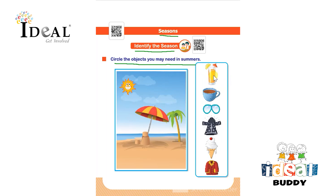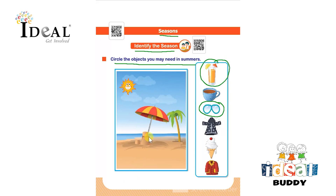The first object is a cold drink or an orange juice — they will need that during summer season. After that it is a cup of tea, and they don't need a cup of tea because it is already hot. The next is goggles, and they will need goggles for summer season.